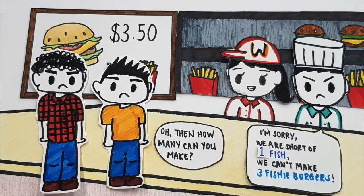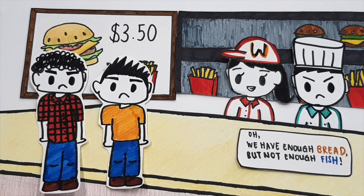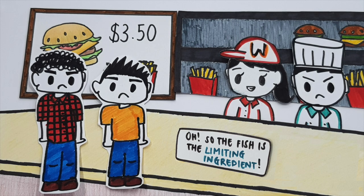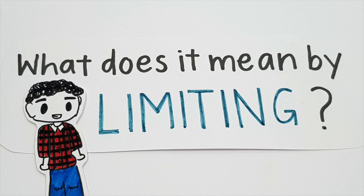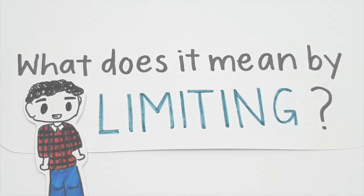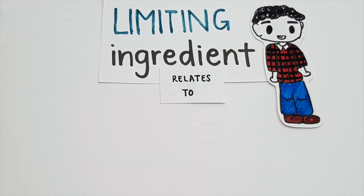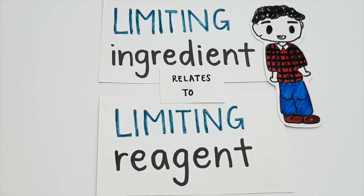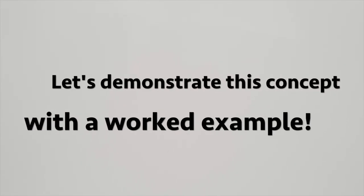Then how many can you make? I have six bread and two fish. We have enough bread, but not enough fish. So the fish is the limiting ingredient. What does it mean by limiting? The limiting ingredient, as mentioned by Oliver earlier, relates to limiting reagent in chemistry. Let's demonstrate this concept with a worked example.